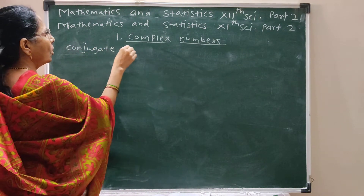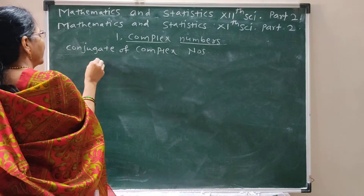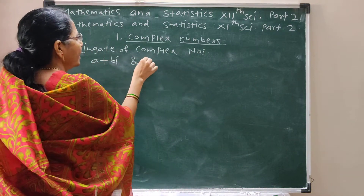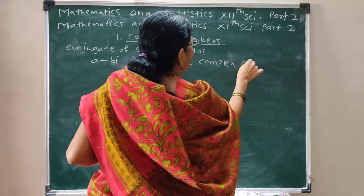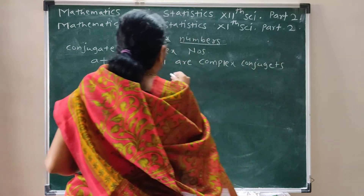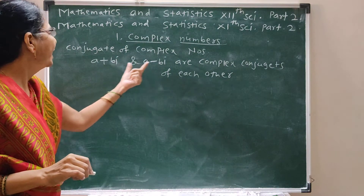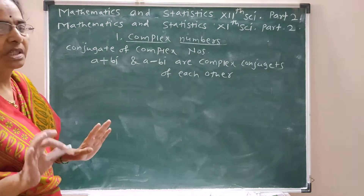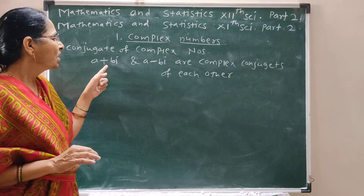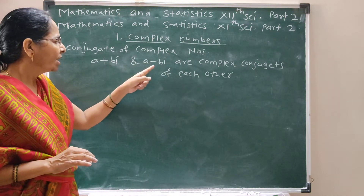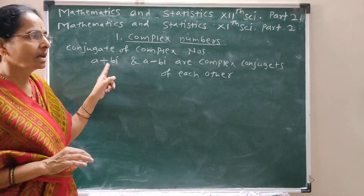Conjugate of complex numbers: A plus Bi and A minus Bi are complex conjugates of each other. That means only the sign of the i-related term changes. Here A plus Bi and A minus Bi — these are complex conjugates.